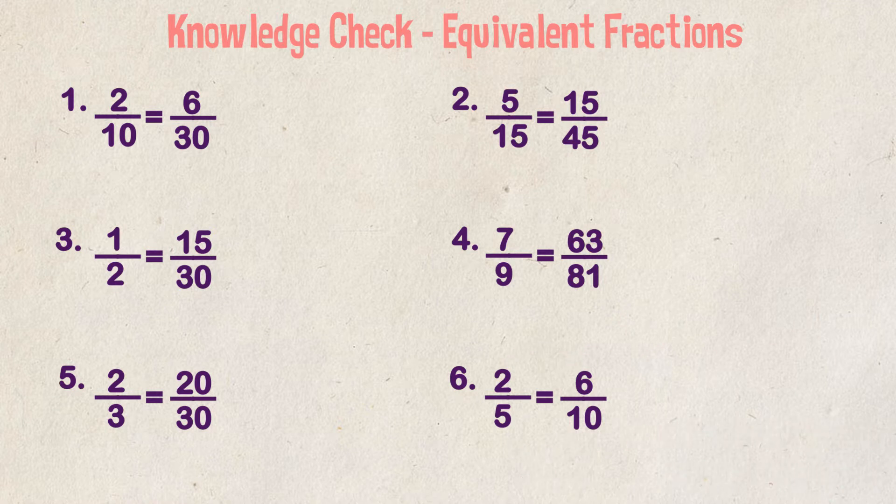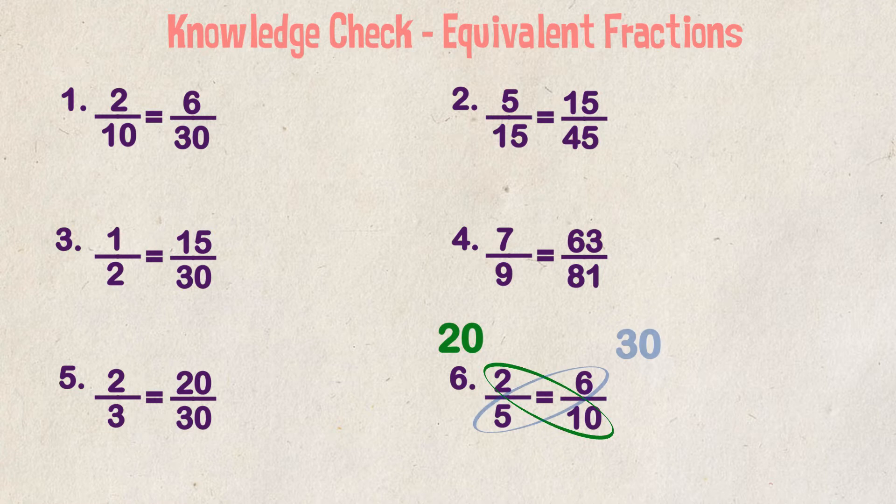Looking at them from cross multiplication, 2 times 10 is equal to 20 and 5 times 6 is equal to 30. So again, they're not equivalent.